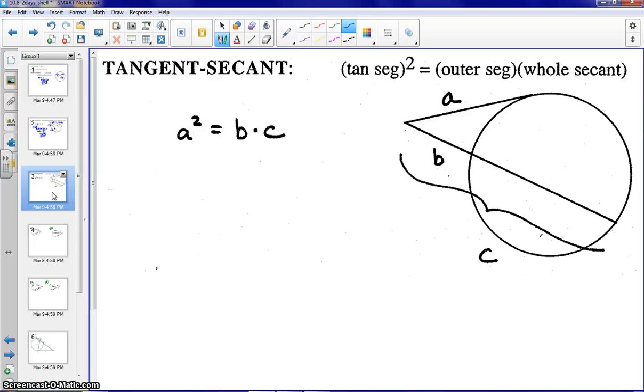So let's go ahead and label. We'll label B as 3. And again, the inner part of the secant or the chord is 5. Let's go ahead and find A in this case. So we'd have tangent squared.